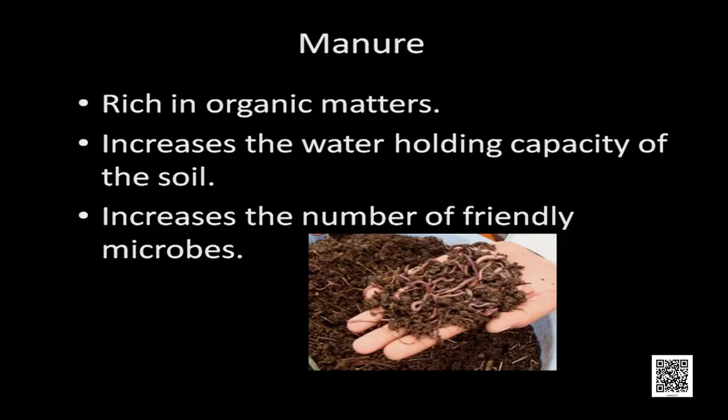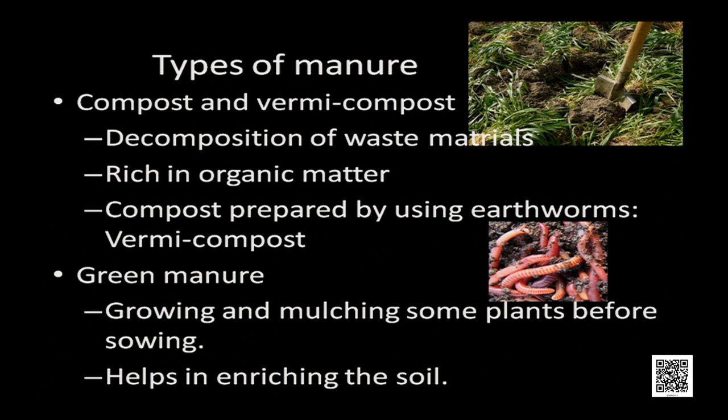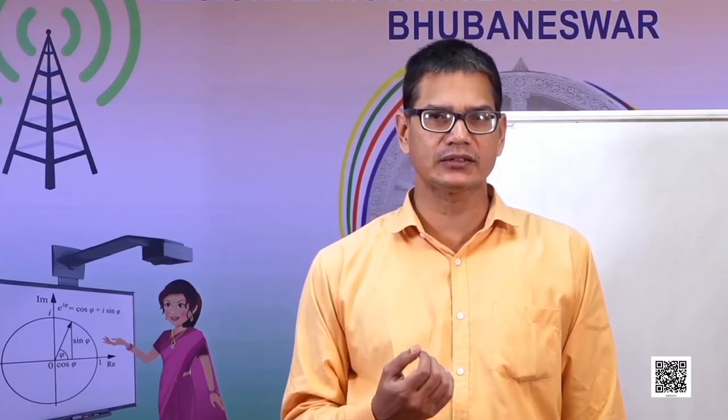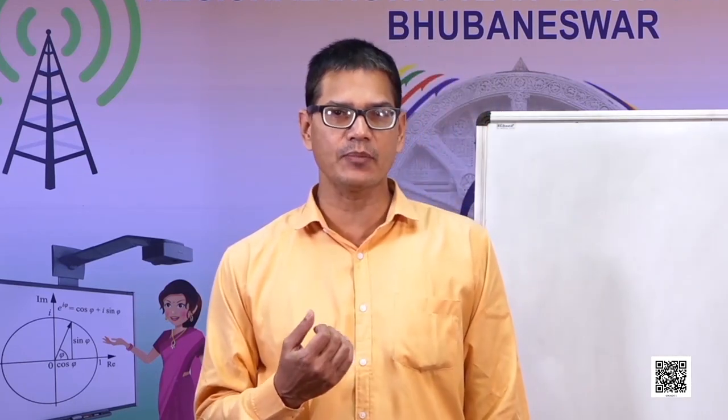Manure is obtained from the decomposition of excreta of animals and plant waste, and it is rich in organic matter. Manure increases the water holding capacity of the soil and increases the number of friendly microbes, improving soil quality. There are two main types of manure: compost and vermicompost, and green manure. Compost is obtained from the decomposition of waste materials, rich in organic matter. Compost prepared using earthworms or redworms is called vermicompost.